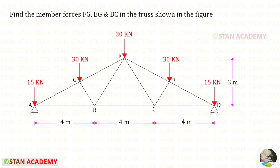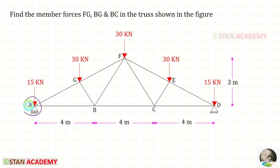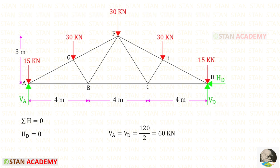Hello everyone, today we are going to find the member forces in BC, in BF and in GF by the method of sections. At point A there is a roller support, and at point D there is a hinged support. In the roller support there will be only one reaction, and in the hinged support there will be two reactions.